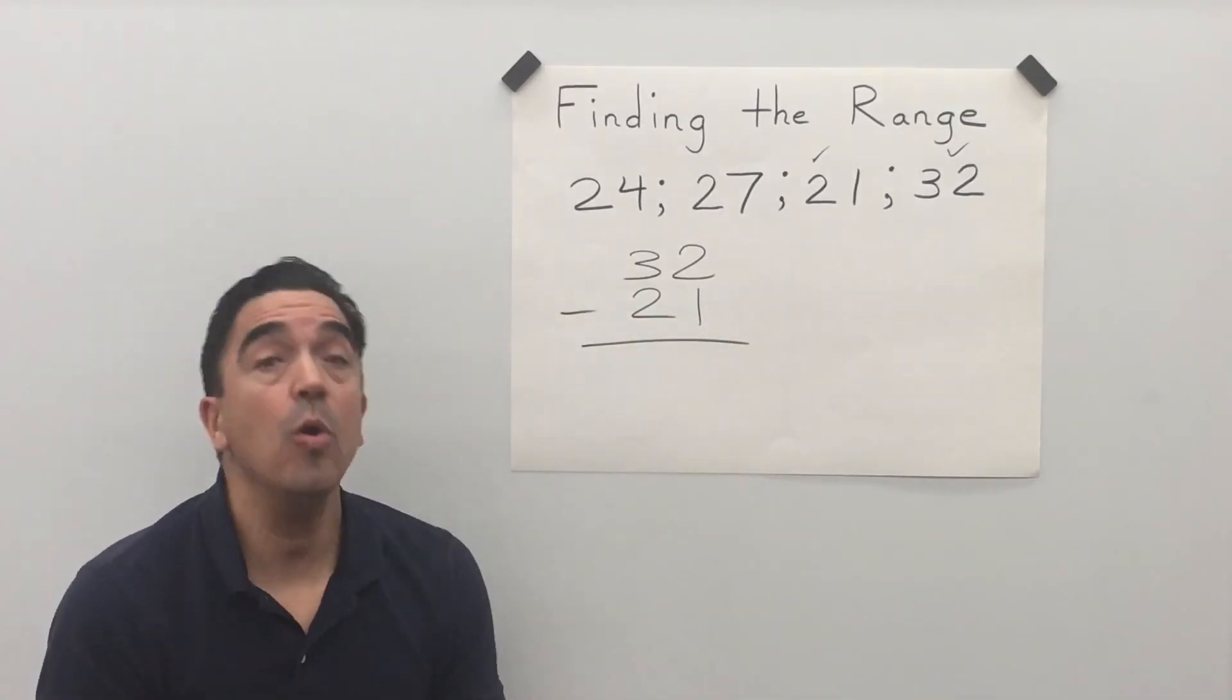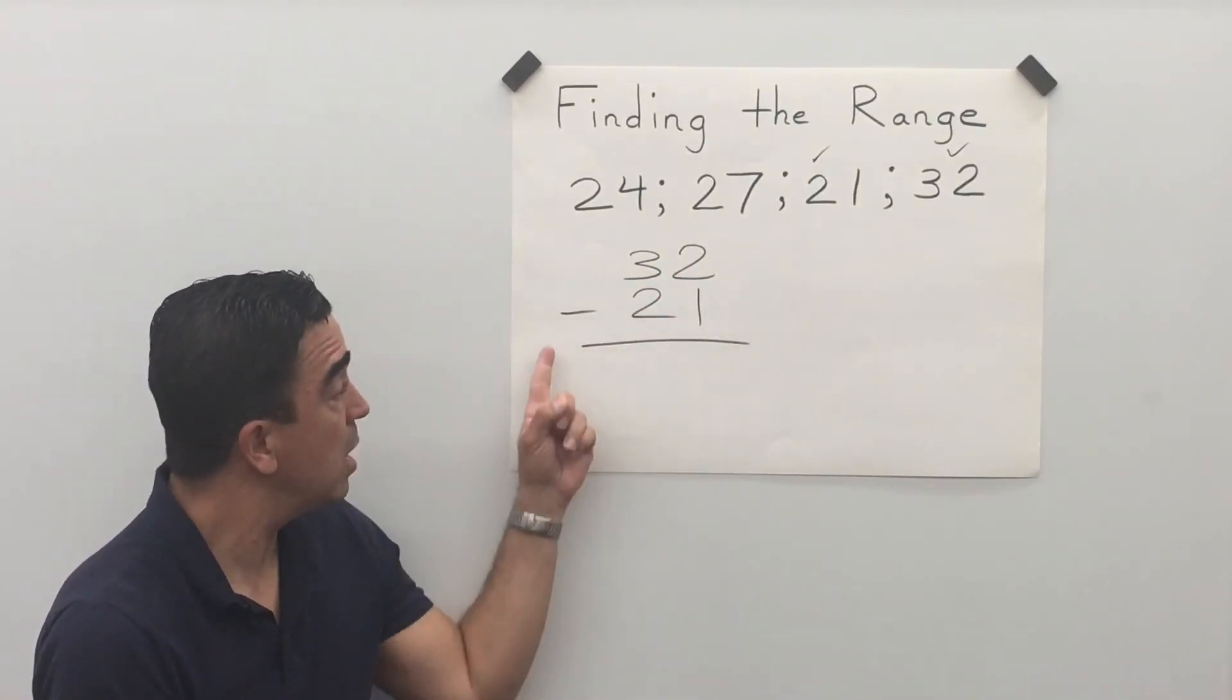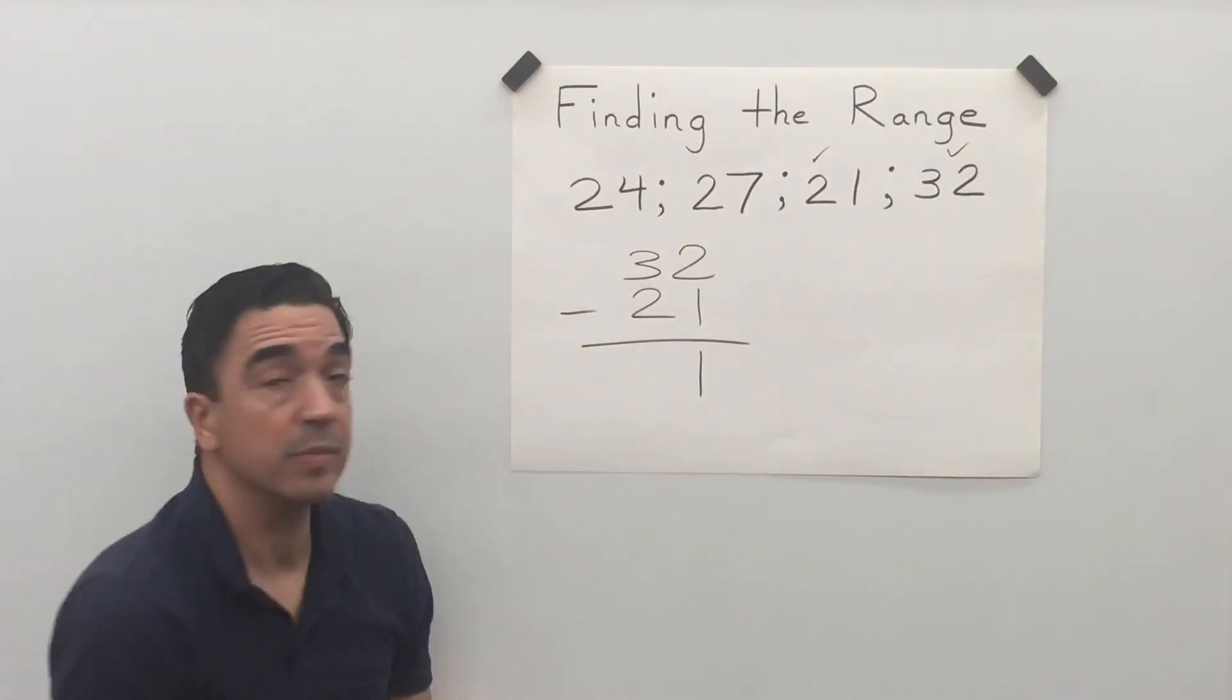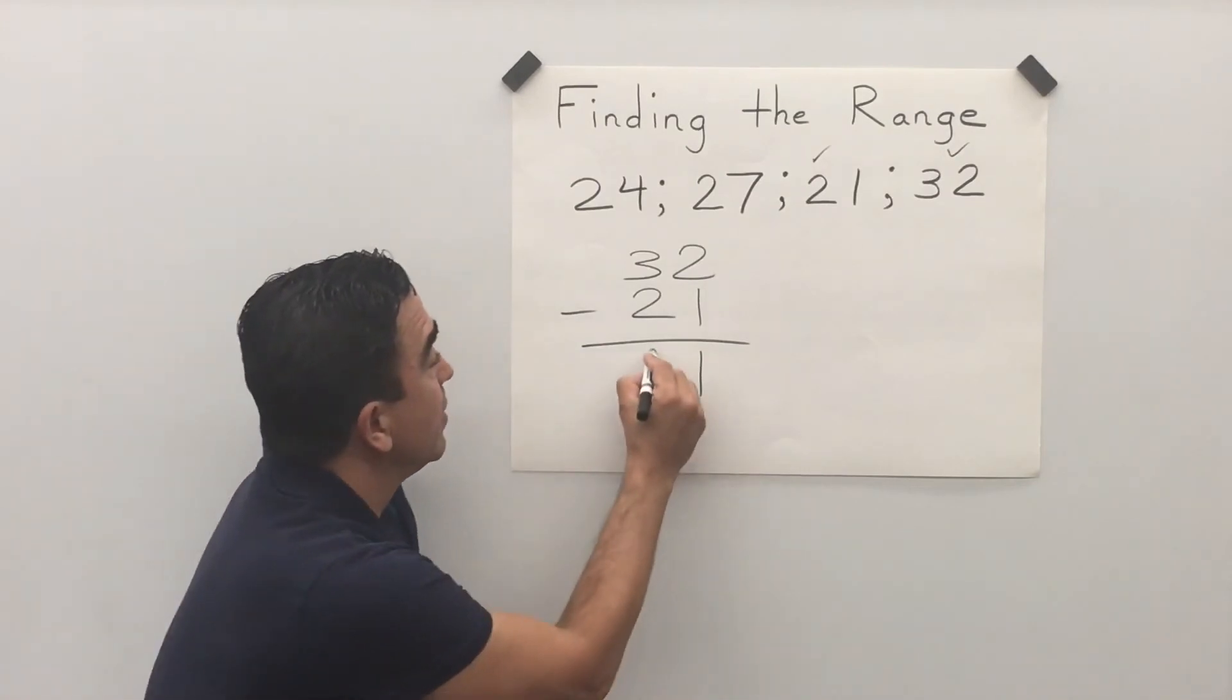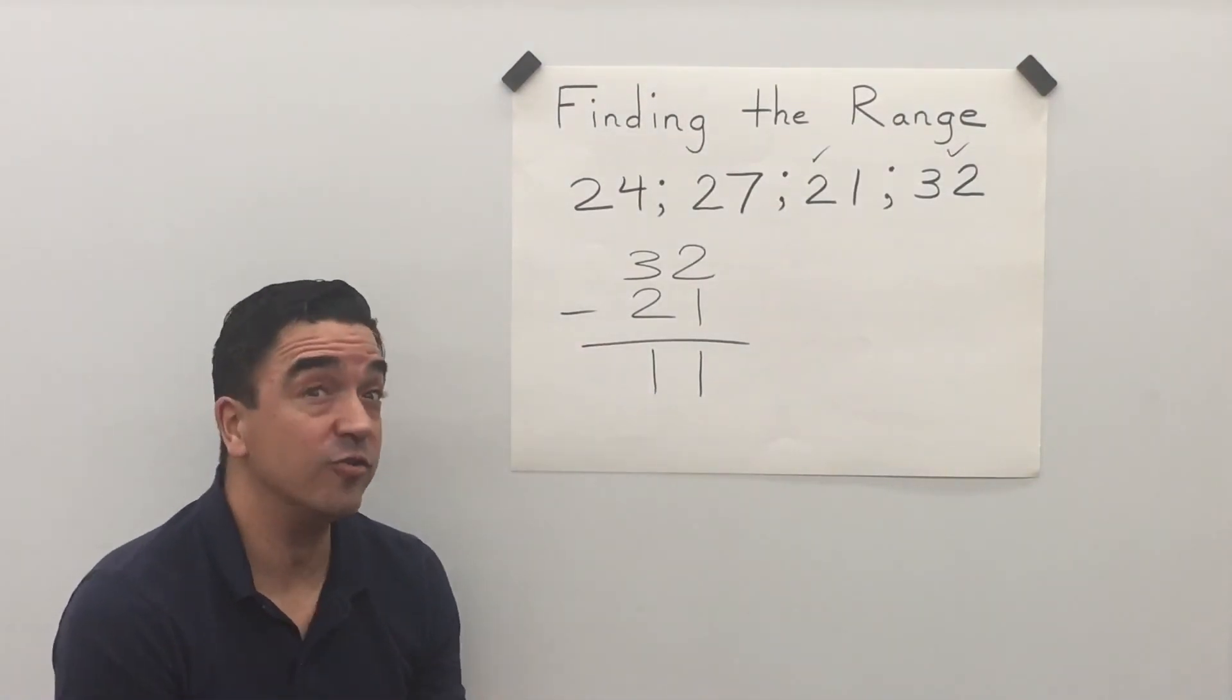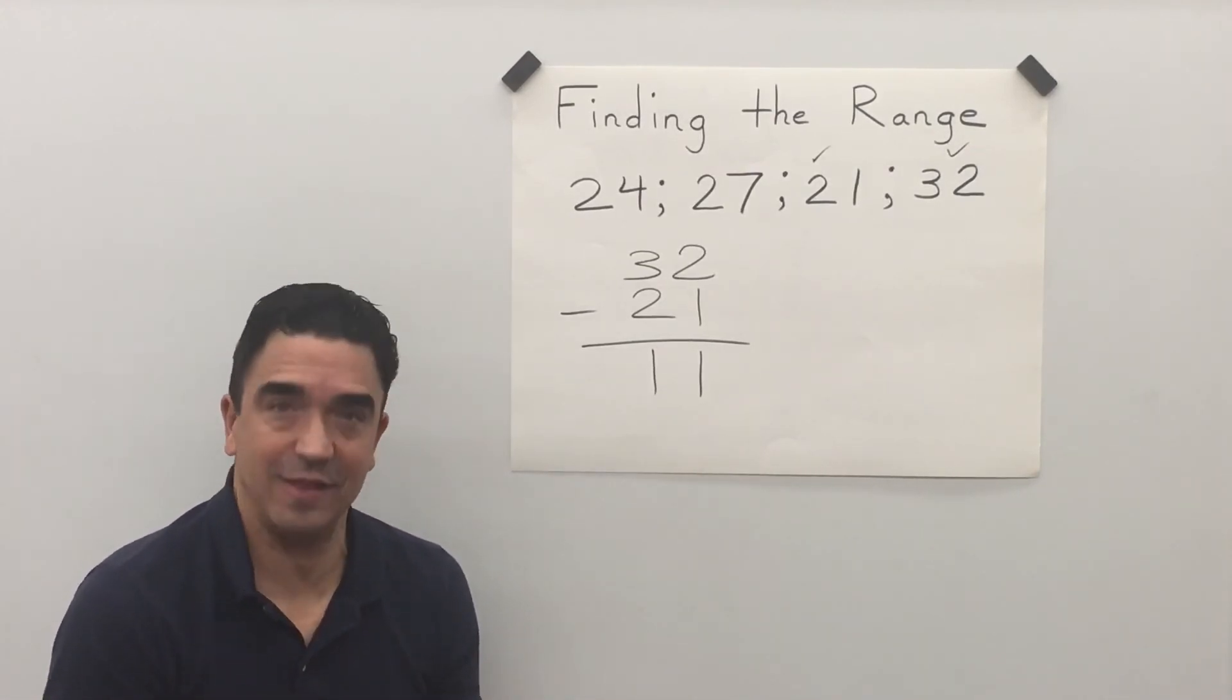Now we have to find the difference. 2 minus 1 is 1. 3 minus 2 is 1. So 32 minus 21 gives us a difference of 11.